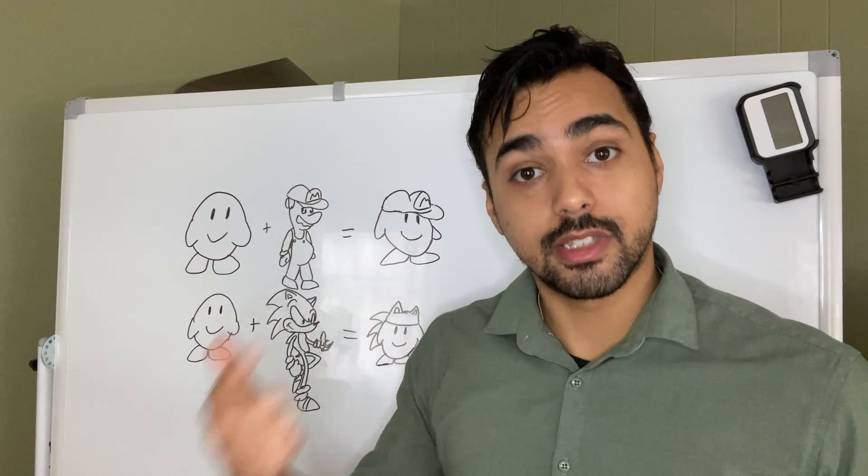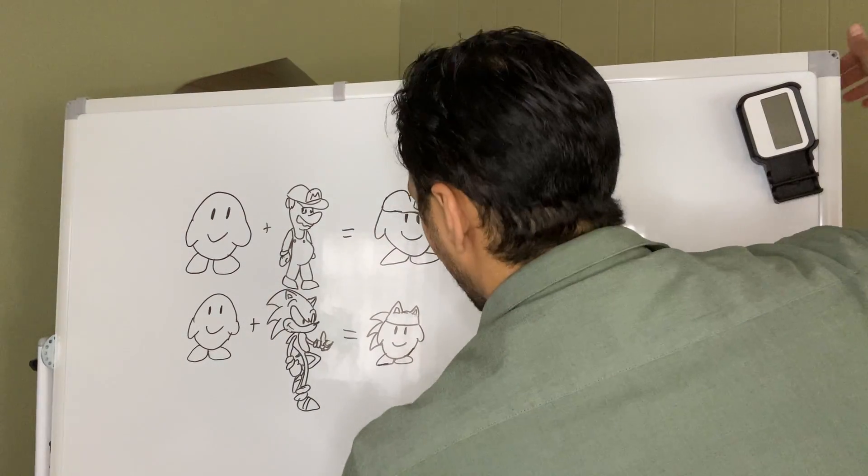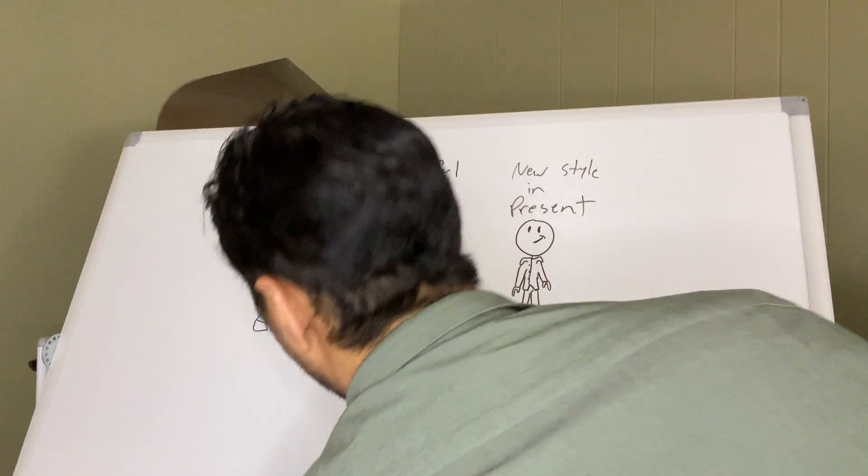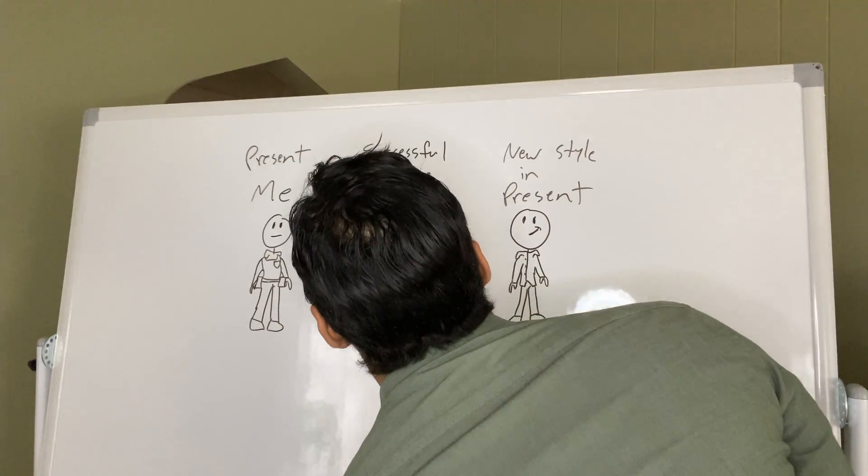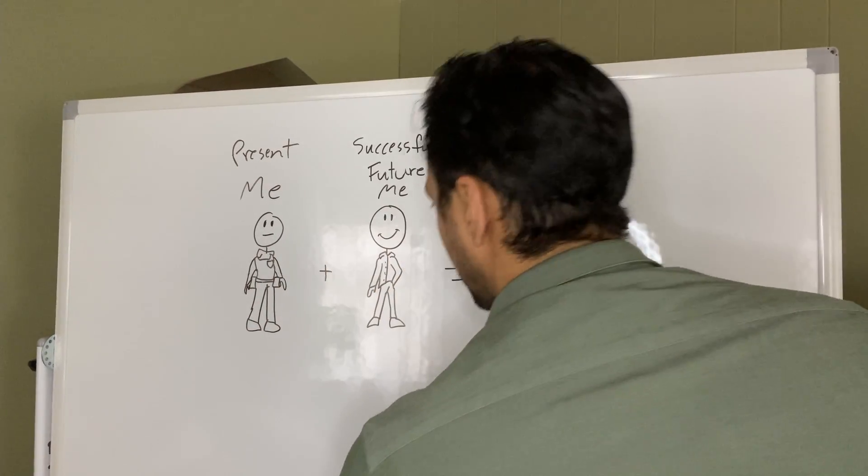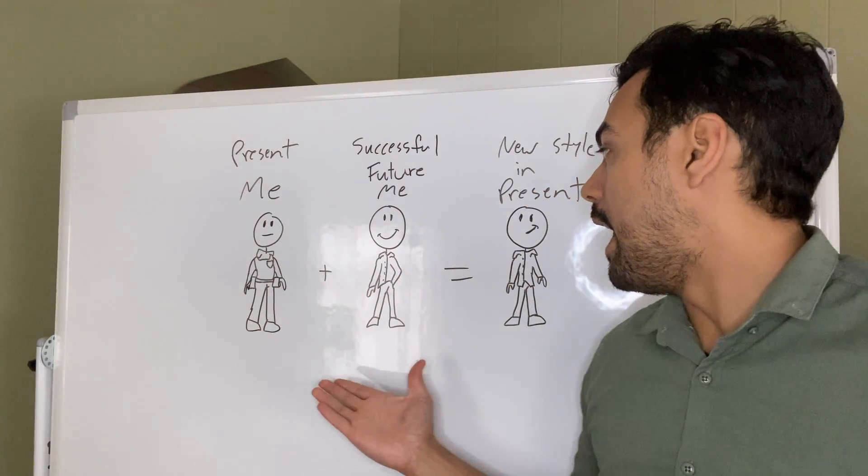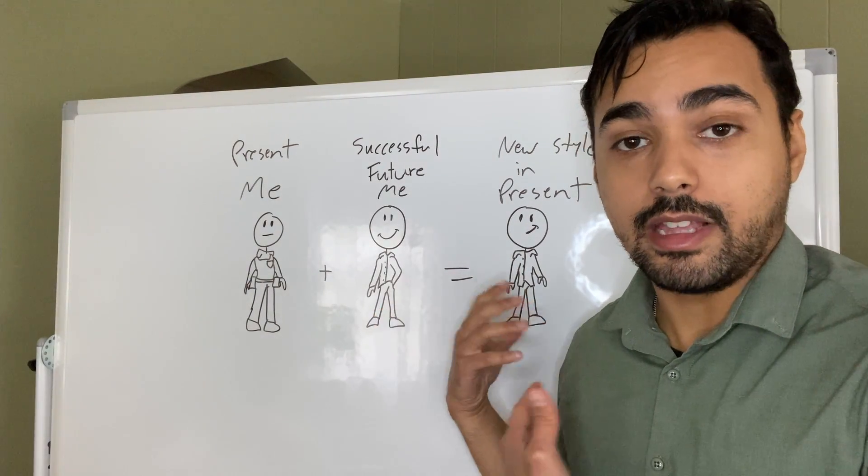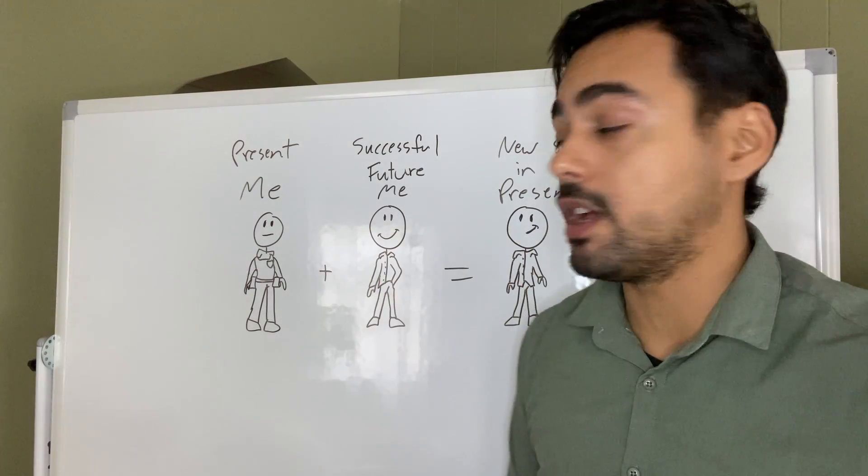If we want the mind power for successful future selves, we too have to clarify the style of our successful selves and start styling ourselves like that character, being our future selves.